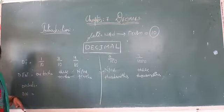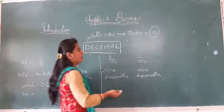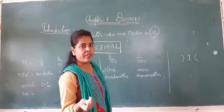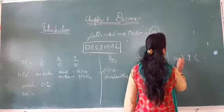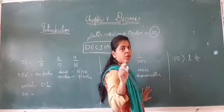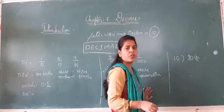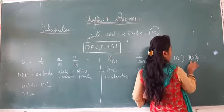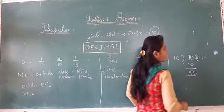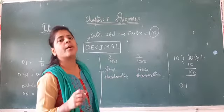Now 1 by 10 can be written as 0.1. Here is why: 1 divided by 10 — since 1 is smaller than 10, nothing is possible, so we write 0. We put a decimal point, which brings 0 to make it 10. Now 10 goes into 10 once, so the quotient is 0.1. The remainder is 0. So 1 by 10 is written as 0.1, or read as 'point one.'